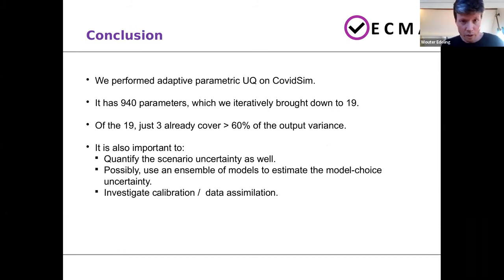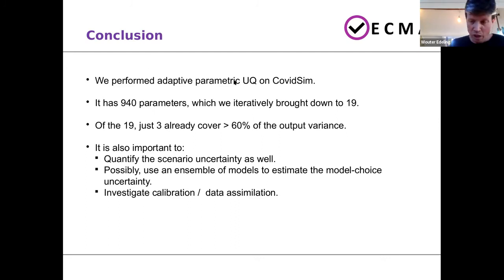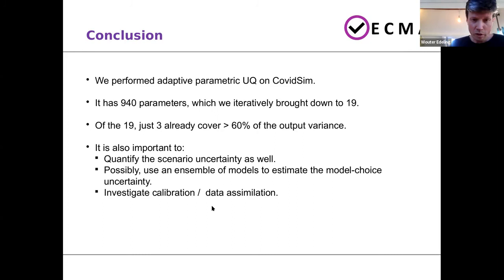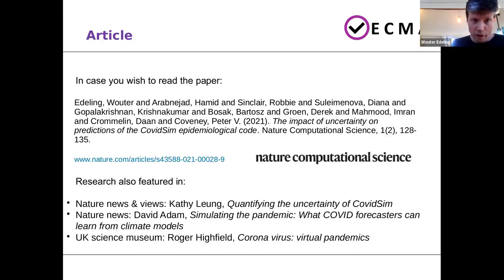In conclusion: we did an adaptive UQ campaign on COVIDSIM. Yes, it has many inputs, but not really — you can bring it down to 19, maybe less. Of those 19, only three already cover 60% of the variance. It's also important to do ensembles over scenarios and possibly models as well. I agree with the first speaker that it's good to also investigate calibration or data assimilation. The paper is published and featured in some other articles as well. I'd like to take any questions.